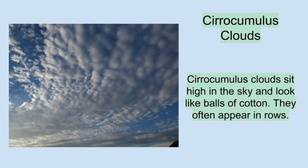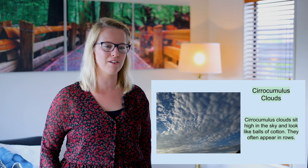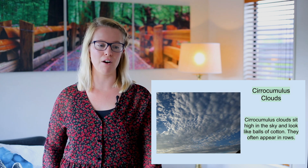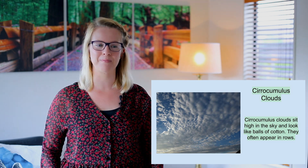Then we have cirrocumulus clouds. Cirrocumulus clouds sit high in the sky and they look like balls of cotton. They often appear in rows as well.